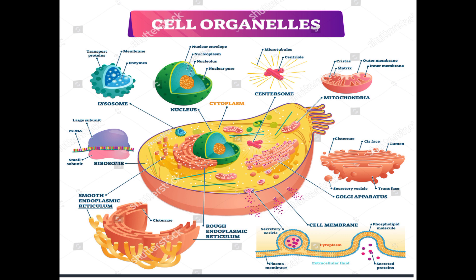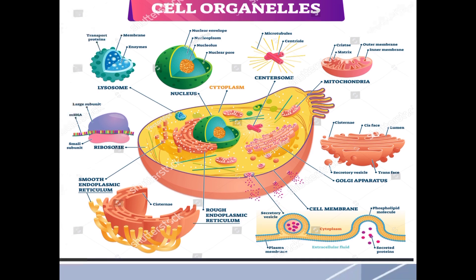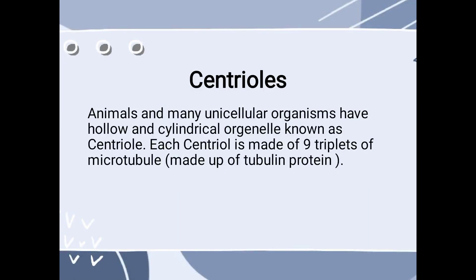Here is the diagrammatic description of a eukaryotic cell showing different organelles — that is lysosome, ribosome, centromere, centriole, and nucleus. Let us discuss centrioles in detail. Animals and many unicellular organisms have hollow and cylindrical organelles known as centrioles.